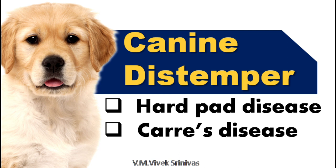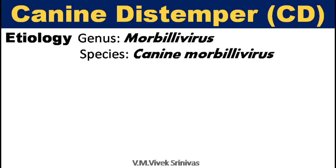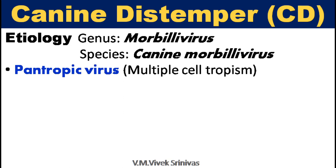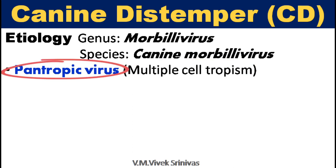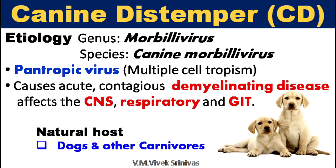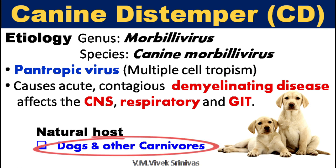Canine distemper. The other names for this infection are hard pad disease and Carre's disease. This disease is caused by the genus Morbillivirus. Based on tissue tropism, this virus targets multiple cell types such as epithelial, lymphoid, and neuronal tissues, so they are termed as pantropic virus. This virus causes acute, contagious, demyelinating disease affecting the central nervous system, respiratory, and gastrointestinal tract in dogs and other carnivores.